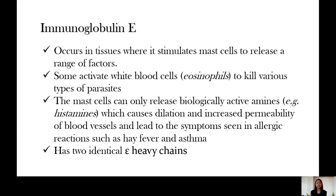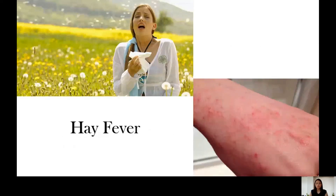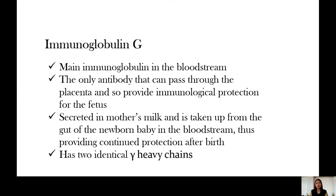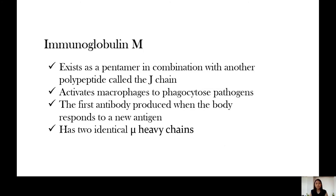For example, if you have allergies, the immune response of our body would usually involve the production of IgE antibodies. Hay fever is an example of an allergic reaction, and the body's response is an increase in the production of immunoglobulin E. Immunoglobulin G or IgG is the main immunoglobulin in the bloodstream. It is the only antibody that can pass through the placenta and provide immunological protection for the fetus. It is also secreted in mother's milk and is taken up from the gut of the newborn into the bloodstream, providing continued protection after birth. It is called IgG because it has two identical gamma heavy chains.